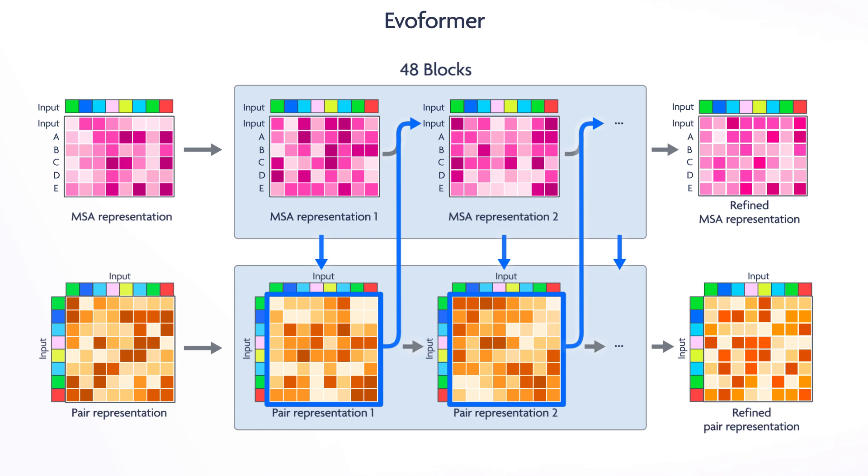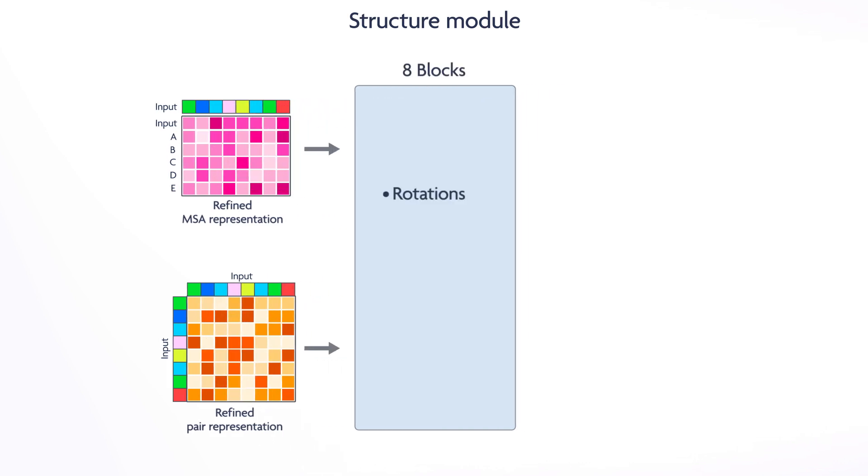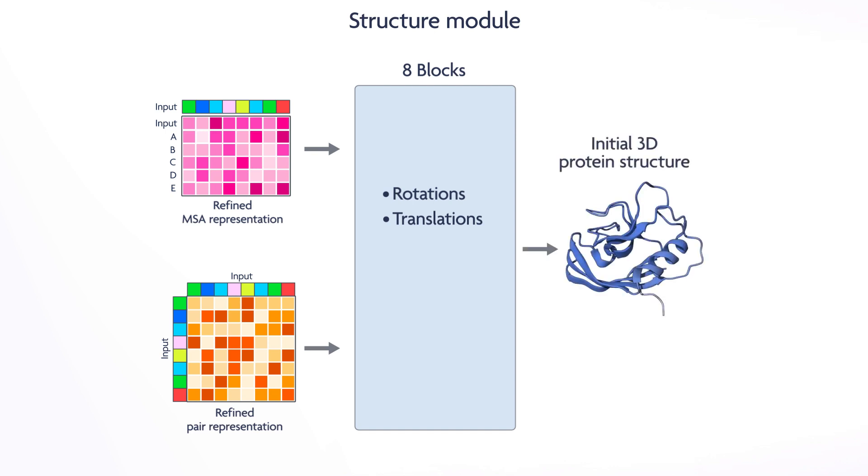The final section involves another neural network called the structure module. It takes the refined models and performs rotations and translations on each amino acid, revealing an initial guess of the 3D protein structure. It also applies physical and chemical constraints dictated by atomic bonds, angles, and torsional angles.